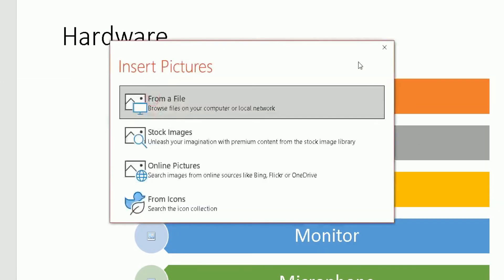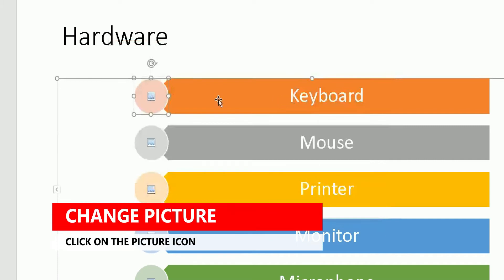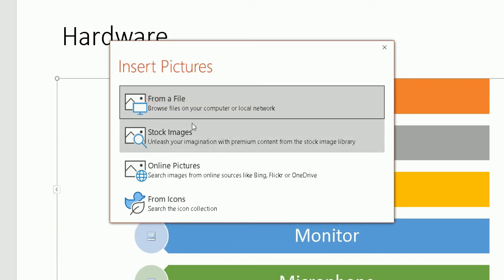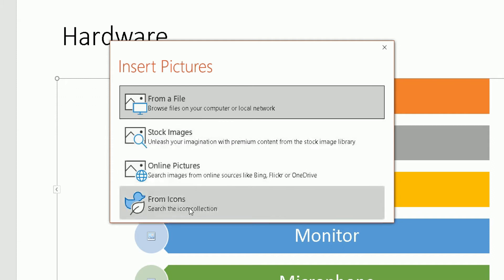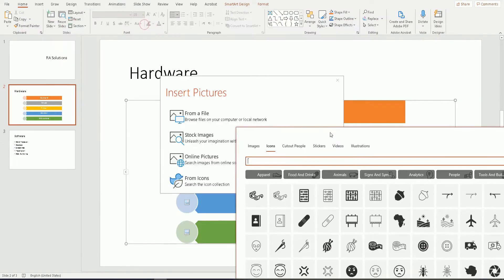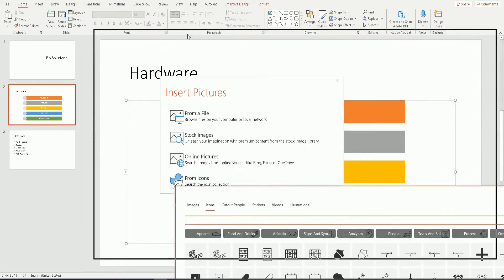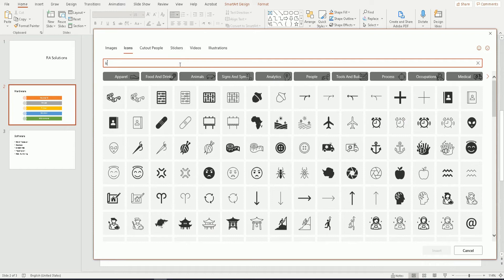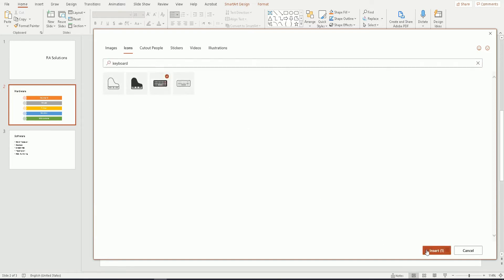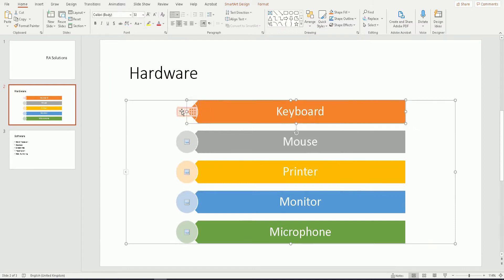You've got an option to choose pictures for each item. Here we have one for keyboard. Click on the picture icon and you can choose from different options — from a file, stock images, online pictures, or icons. I'm going to choose Icons, then search for keyboard. It brings back different keyboard icons. I'll choose that one and click Insert. It has now replaced the default picture with a keyboard icon. I'll do the same for the next one — go to Icons and search for mouse.